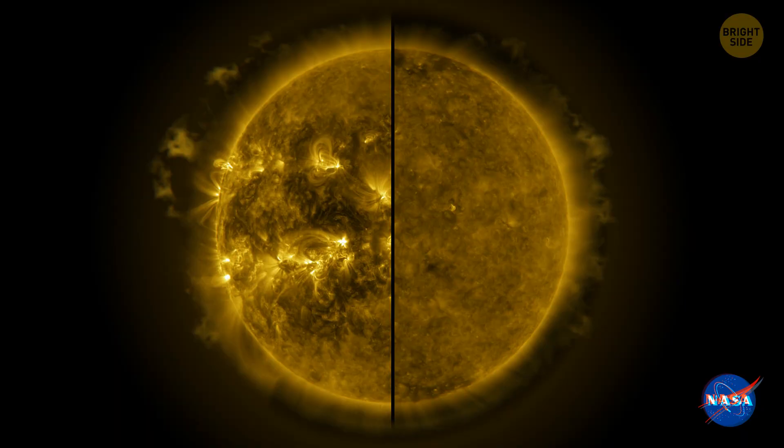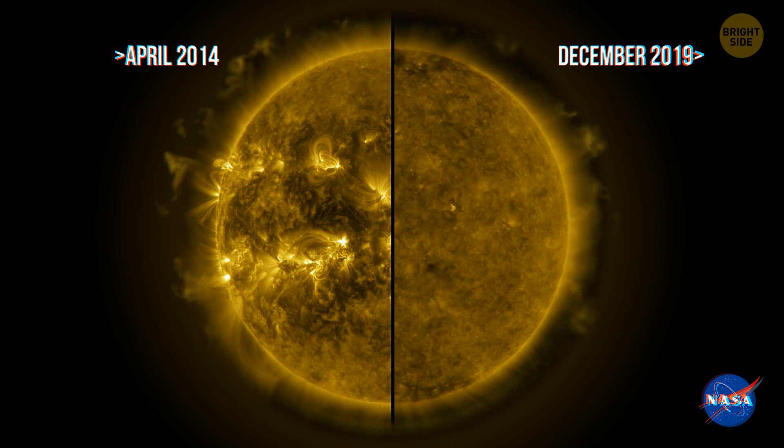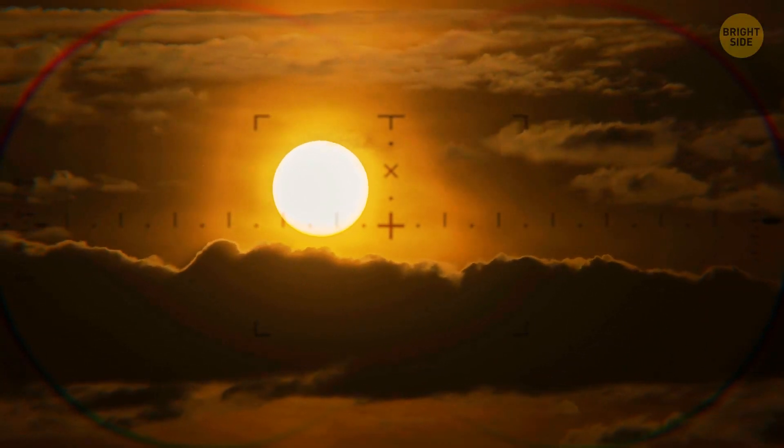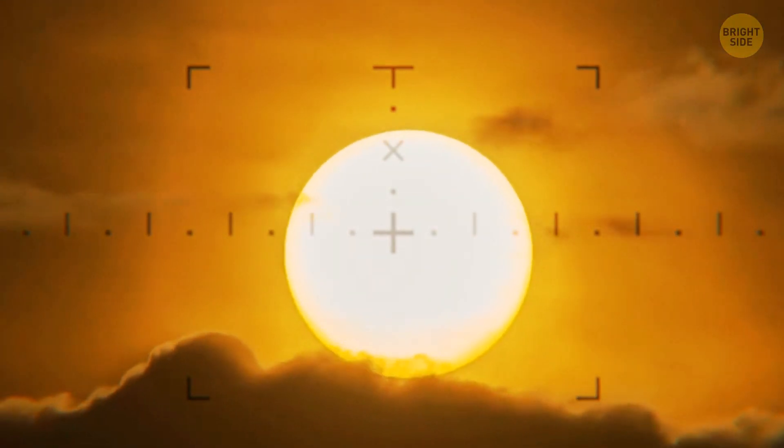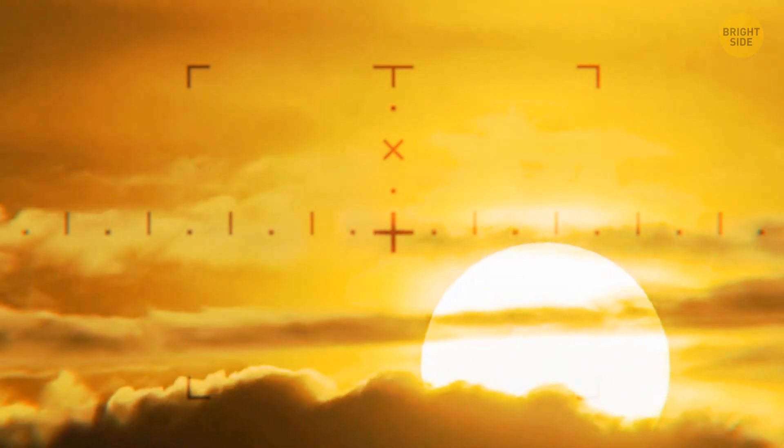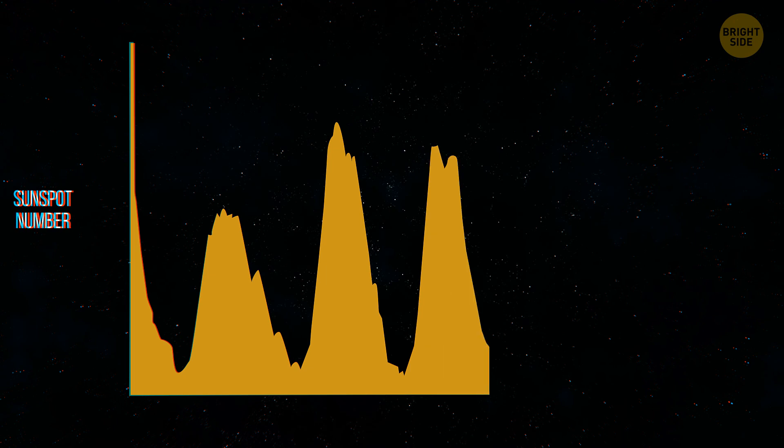NASA predicted that the present cycle of solar activity would be calm like the previous one. But it's starting to look like that is not the case. Presently, we are in solar cycle number 25. That's the 25th 11-year solar cycle since 1755, when record-keeping began. This cycle of solar activity is expected to peak in 2025.